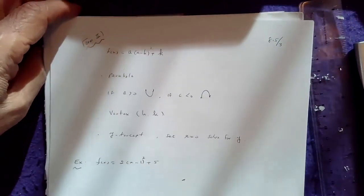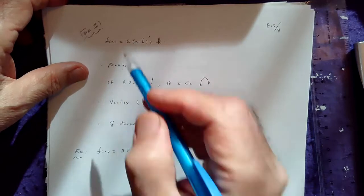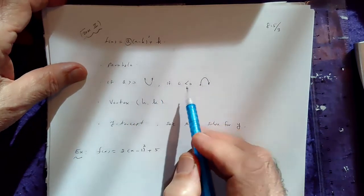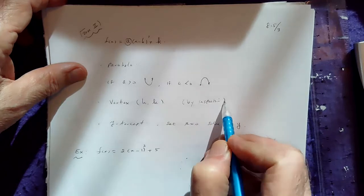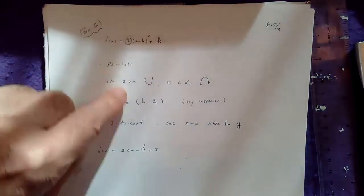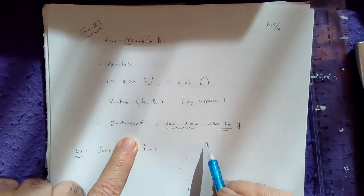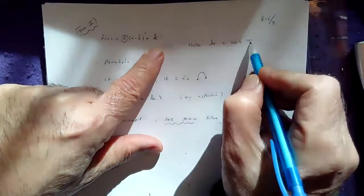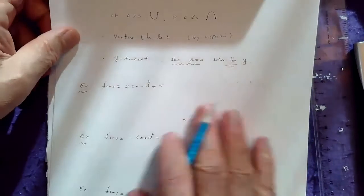Sometimes the function appears in form 2: a times (x minus h) squared plus k. This is still a parabola. If a, the leading coefficient in front of the parentheses, is positive, the parabola opens up; negative means it opens down. However, in this form you can find the vertex by inspection — the vertex is always at (h, k). The disadvantage is that k is not the y-intercept. To find the y-intercept in this form, you must set x equal to 0 and solve for y.